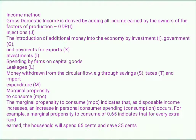Income method: gross domestic income is derived by adding all income earned by the owners of the factors of production — GDP. Injection: the introduction of additional money into the economy by investment (I), government expenditure (G), and payments for exports (X). Investment (I): spending by firms on capital goods. Leakages: money withdrawn from the circular flow through savings (S), taxes (T), and imports.